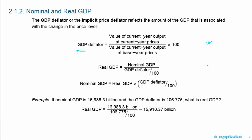Real GDP equals nominal GDP divided by the GDP deflator divided by 100. Rearranging the algebra, nominal GDP equals real GDP times the GDP deflator divided by 100.